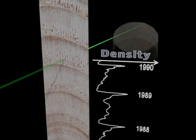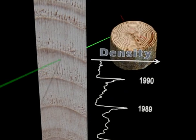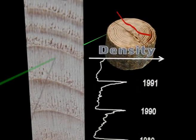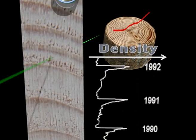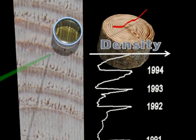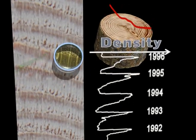Density changes within a ring and generally increases from the middle of the tree to the bark. The late wood parts of the ring show up as peaks in the density curve.